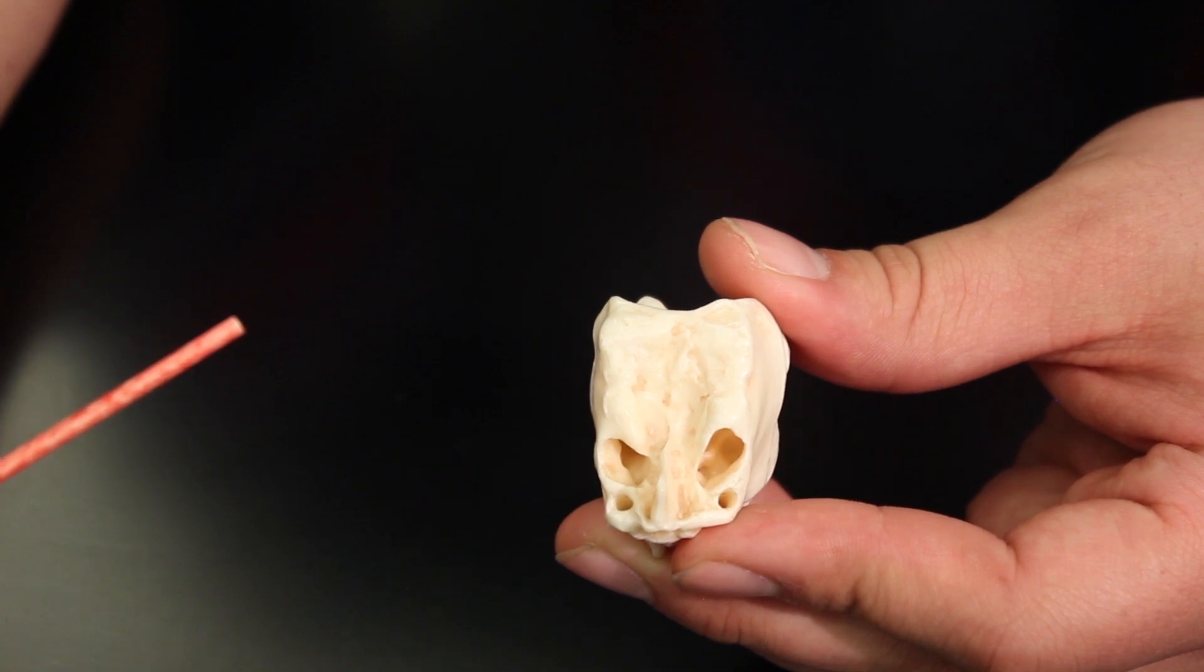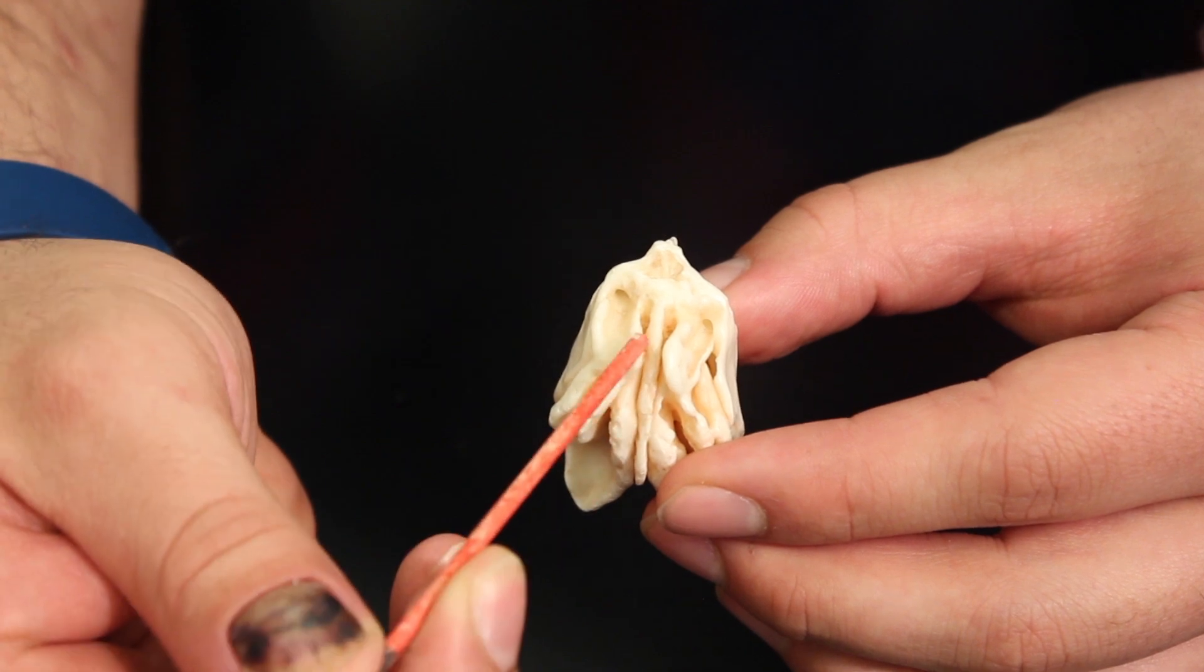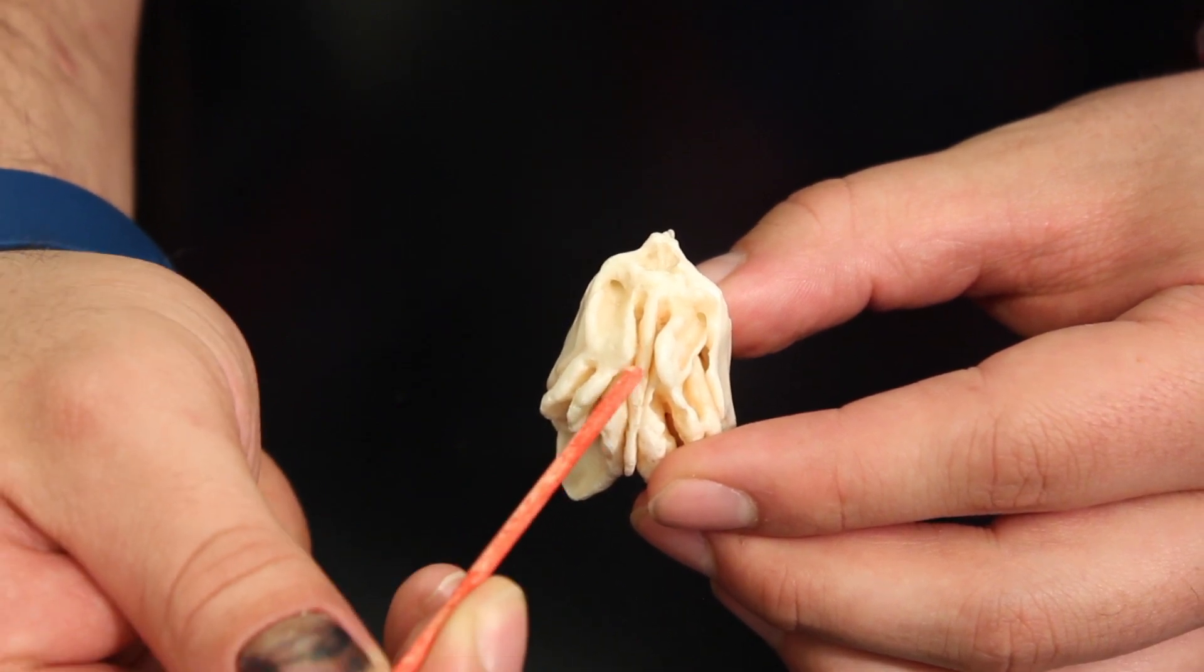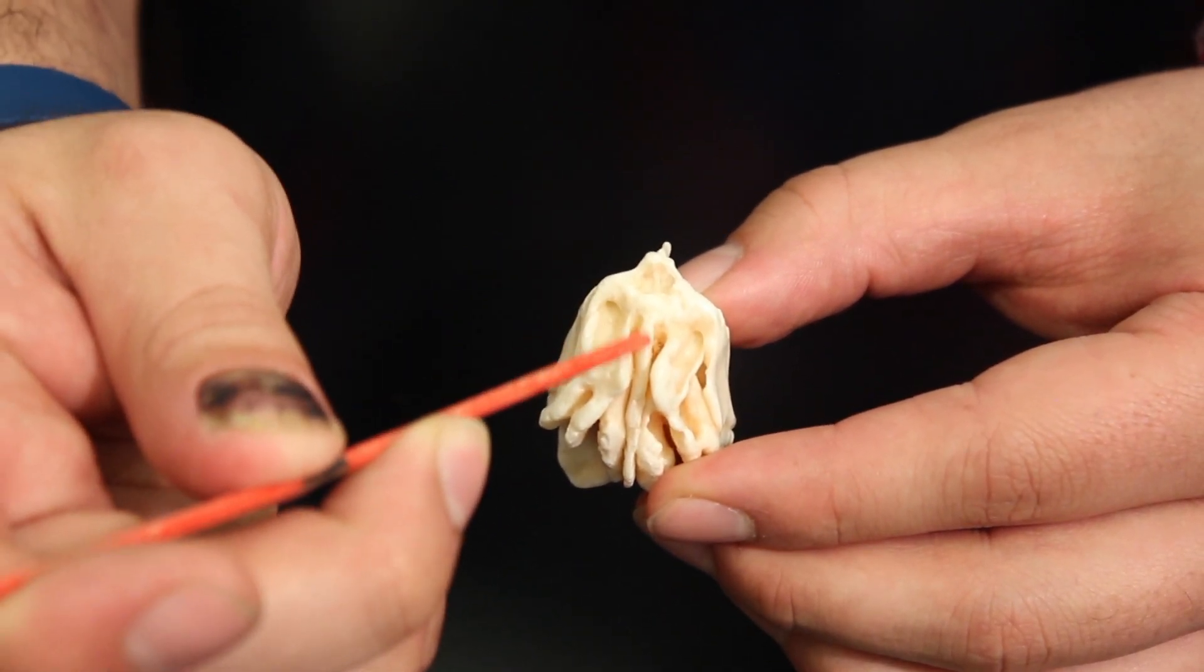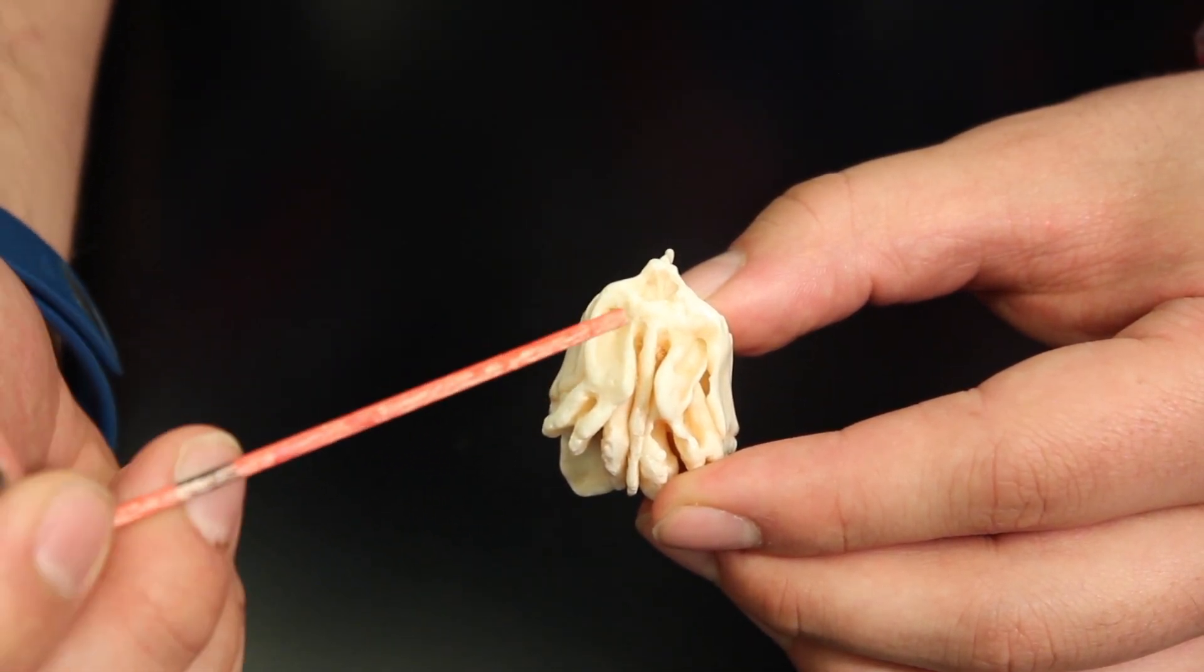Alright, next thing. If you look here, we got a little thing moving right down the middle. This little piece moving right down the middle, you can see a little bit of it there too. That's called the perpendicular plate of the ethmoid bone. That's actually what helps to form a part of the nasal septum, that and the vomer.